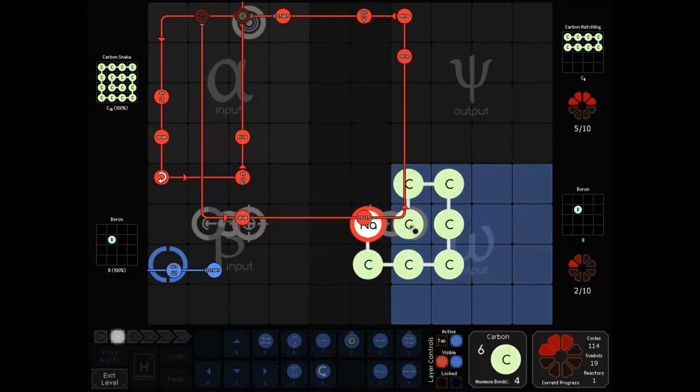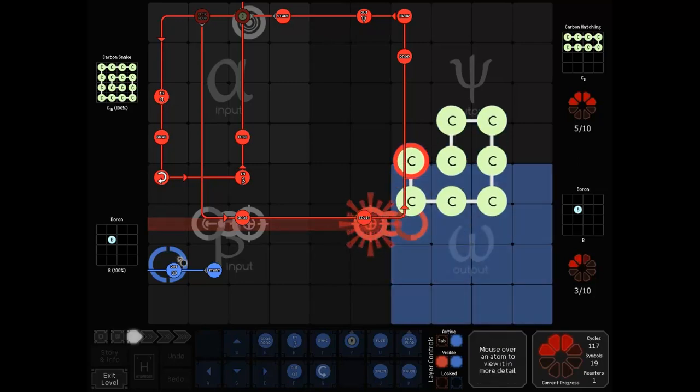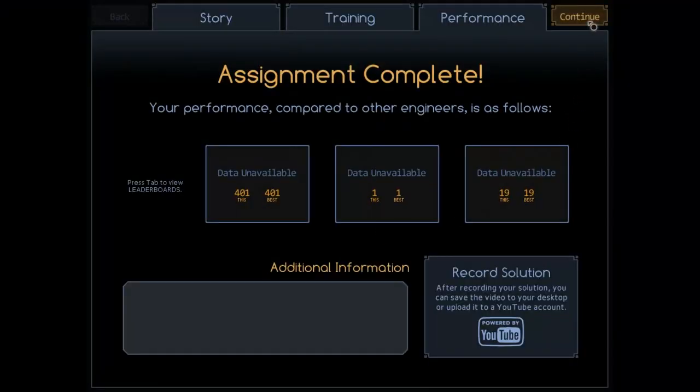You'll notice he's using the fission bug here, where you split, it should hit the carbon and collide, but since it gets outputted right away, or instantly, it continues on working. So he gets to 19 symbols for this.